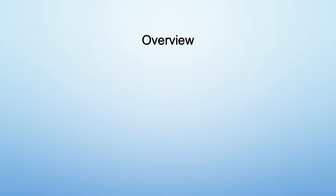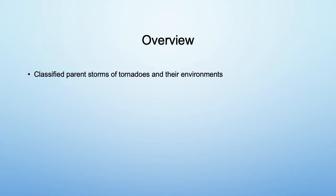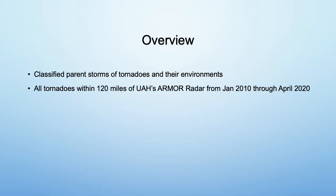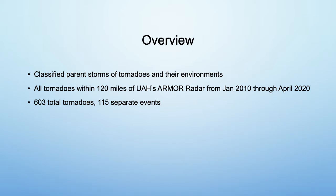Here's a brief overview of my project. I classified the parent storms of tornadoes and their environments. As for the scope of my project, I included all tornadoes within 120 miles of UAH's ARMOR radar located at the Huntsville International Airport from January 2010 through April 2020. There were a total of 603 tornadoes over 115 events, and those events ranged from 1 to 94 tornadoes. For those curious, the event with 94 was April 27, 2011.